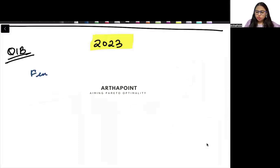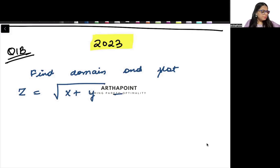It says find the domain and plot. You are given the function z is equal to square root of x plus y minus square root of x minus 3. You need to find the domain of the function and plot it and it is for 4 marks.